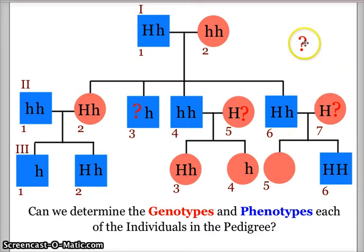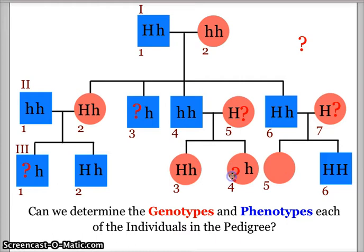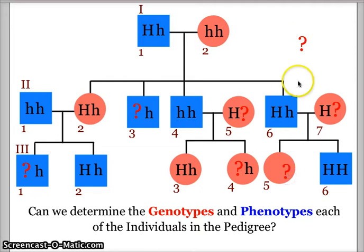We also place a question mark for generation three individual one, since the little h came from the dad but we're not sure which allele comes from the mom. For generation three individual four, the little h came from the dad but we're unsure about the mom's contribution — another question mark. Lastly, generation three individual five has a double question mark because we don't know anything about either of her parents' unknown alleles. The only way to determine her genotype is to get more information once she has offspring.